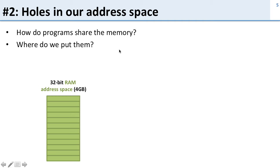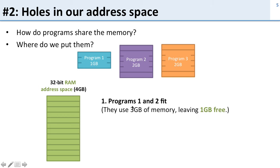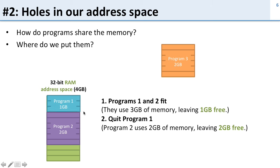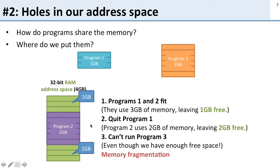Here's another problem: holes in our address space. When we have multiple programs running together, they share the memory — so where do we put them? Here's our 32-bit address space, and we have a computer with the full four gigabytes. Program one wants one gigabyte, program two wants two gigabytes, and program three wants two gigabytes. Programs one and two fit together using three gigabytes, with one gigabyte free. But when I quit program one, I've freed up space — now I have one gigabyte here and one gigabyte there, but I can't run program three. Even though I have two gigabytes free and program three needs two gigabytes, it's split up. This is called memory fragmentation — holes in memory due to the order in which programs were run.